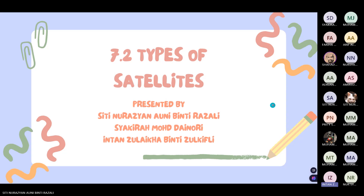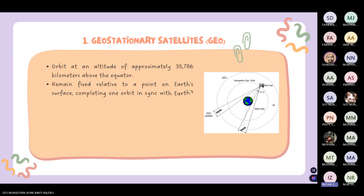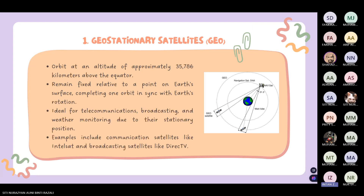The first satellite type is geostationary satellites. GEO orbits at an altitude of approximately 35,786 kilometers above the equator. It remains fixed relative to a point on Earth's surface, completing one orbit in sync with Earth's rotation. It is ideal for telecommunications, broadcasting, and weather monitoring due to their stationary position. Examples of GEO include communication satellites like Intelsat and broadcasting satellites like DirecTV.